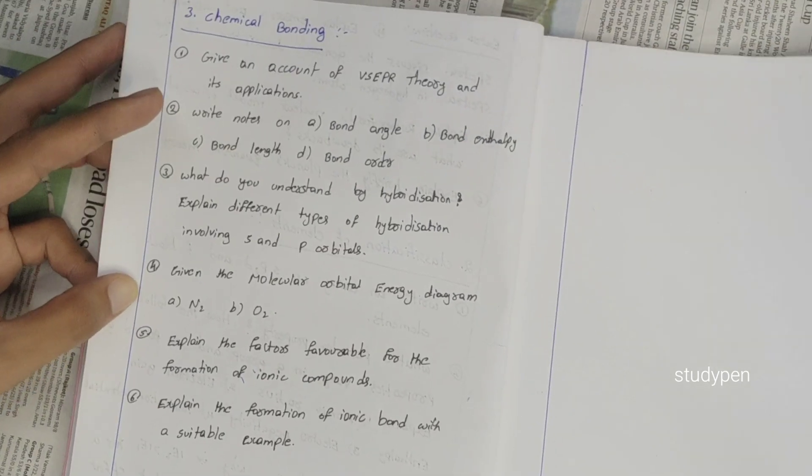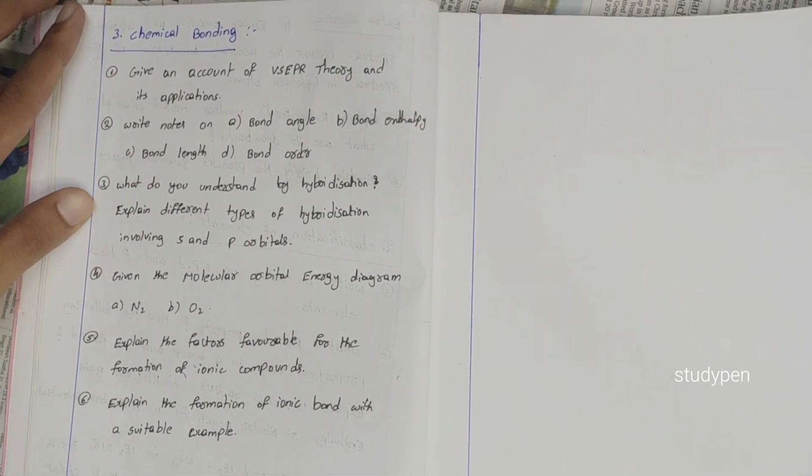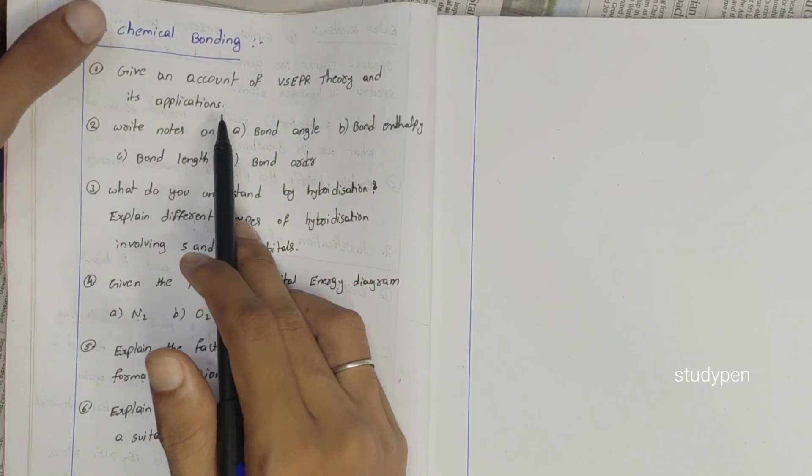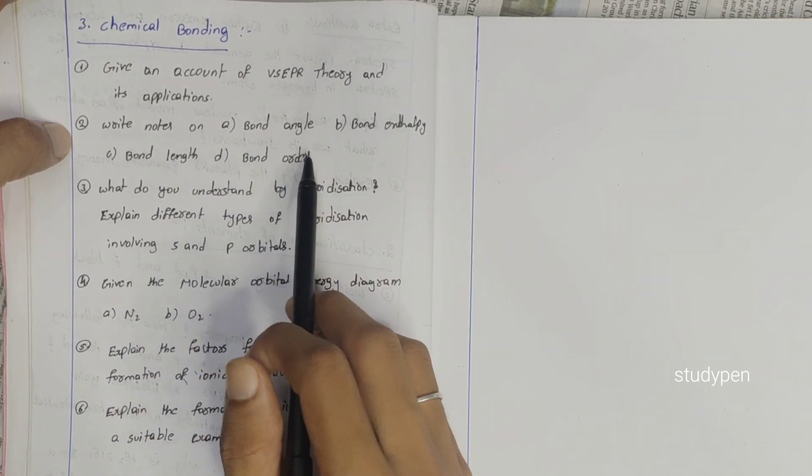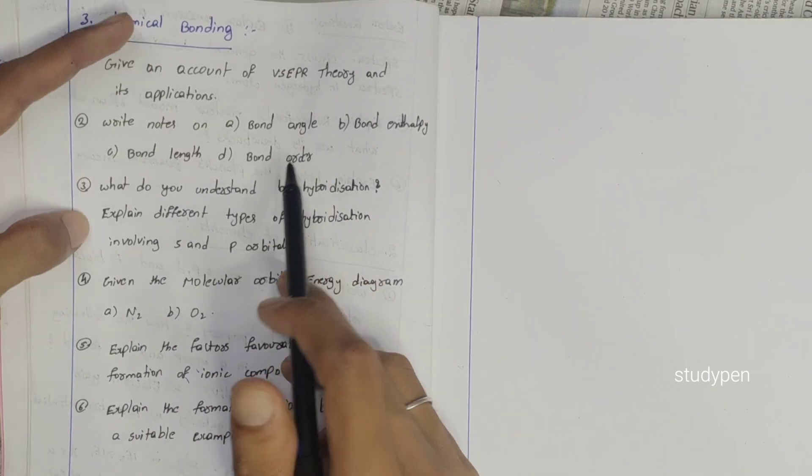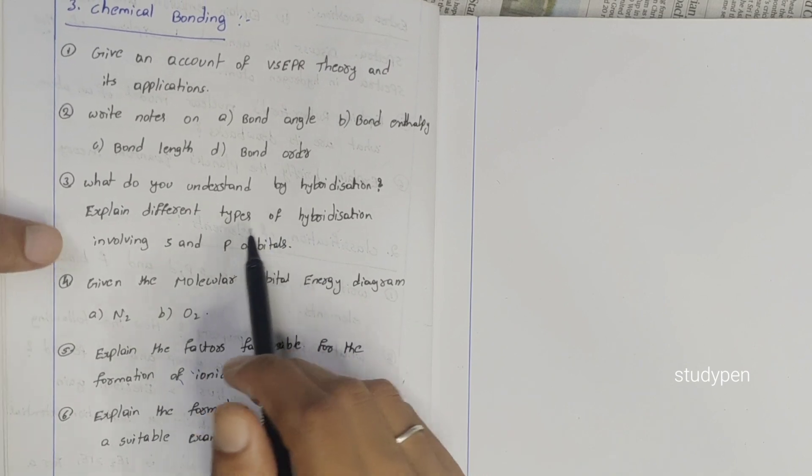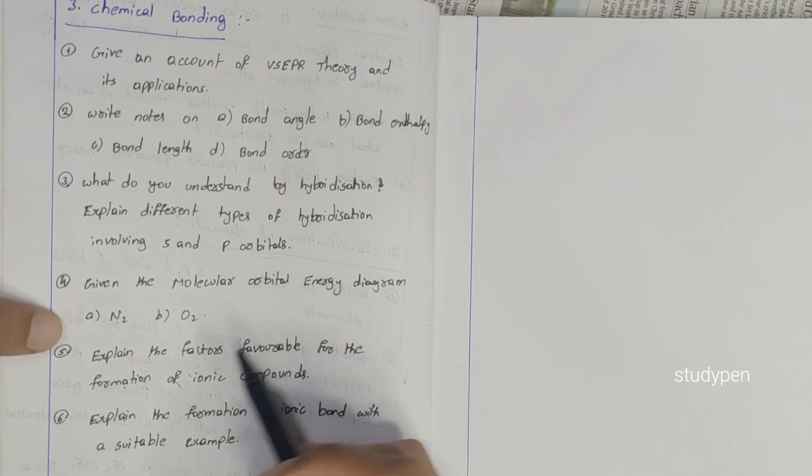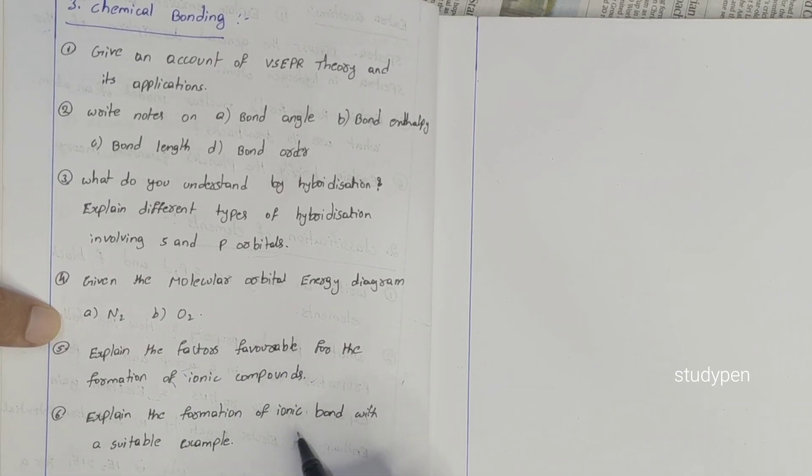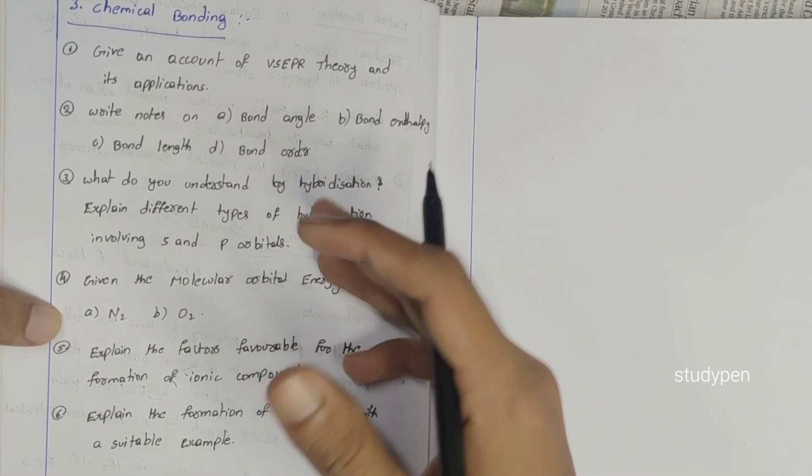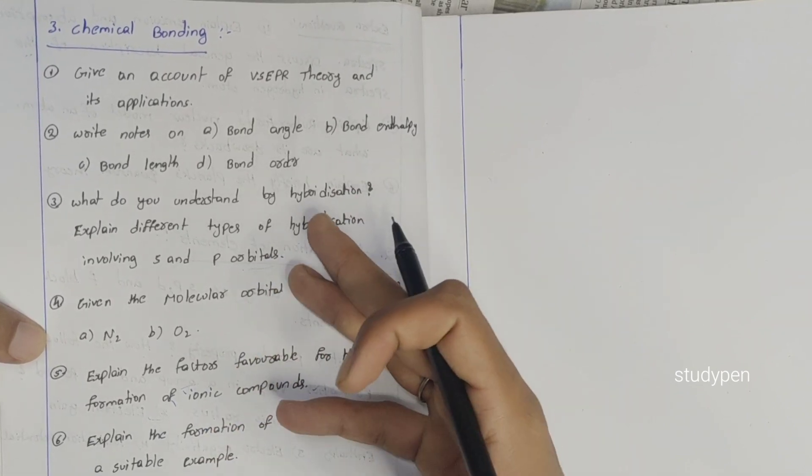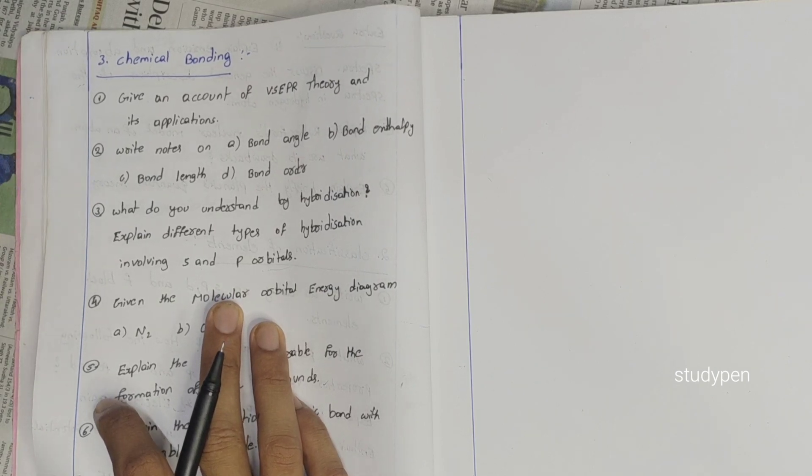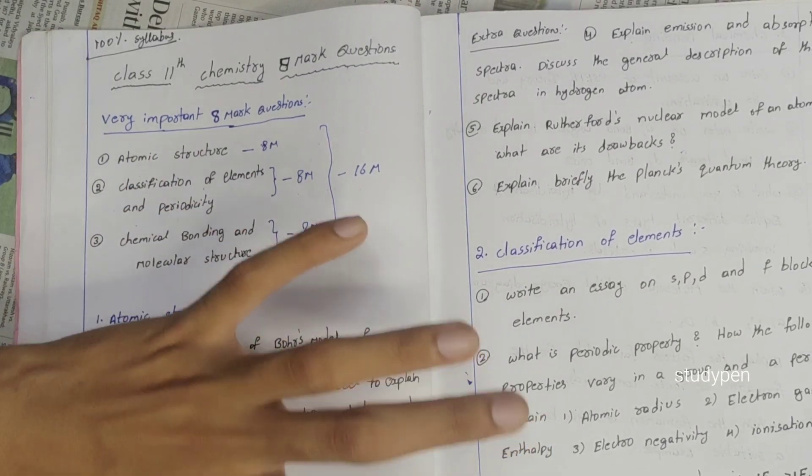Lastly, chemical bonding. Chemical bonding has a lot of eight mark questions. Give an account of VSEPR theory and its applications. Write notes on bond angle, bond enthalpy, bond length, bond order. What do you understand by hybridization? Explain different types of hybridization involving s and p orbitals. Give the molecular orbital energy diagram for N2, O2, and explain the factors favorable for the formation of ionic compound. Here we have chemical bonding, very important questions, overall six questions total.